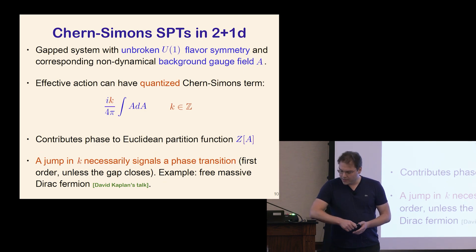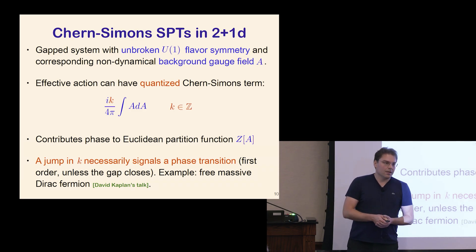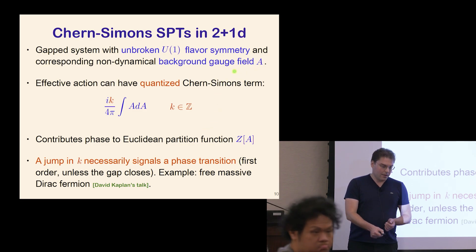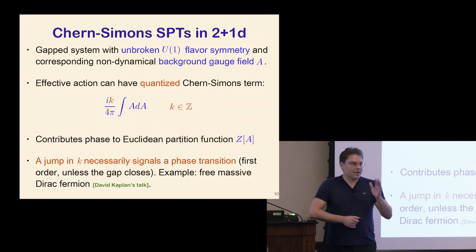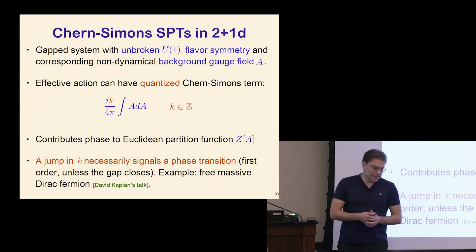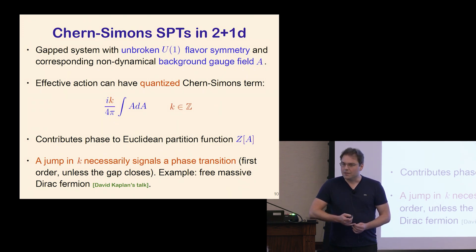Here's the quintessential example: a gapped system in 2+1 dimensions with an unbroken U(1) flavor symmetry. You couple it to a background gauge field A — non-dynamical, a probe. When you compute the effective action by integrating out all dynamical matter, it may have a Chern-Simons term for this background gauge field A with coefficient k, which is necessarily quantized because you're in a fully gapped phase. In Euclidean signature, the Chern-Simons term contributes a phase to the partition function — so the phase of the partition function as a function of backgrounds detects these Chern-Simons terms or SPTs more generally.